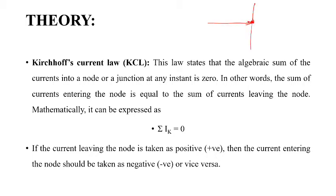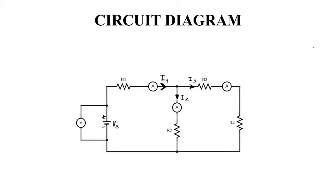This node has one incoming current and two outgoing currents. According to Kirchhoff's Current Law, the summation of I_K will be zero, meaning I1 will be equal to the sum of I2 plus I3, or we can say I1 minus I2 minus I3 would be equal to zero.